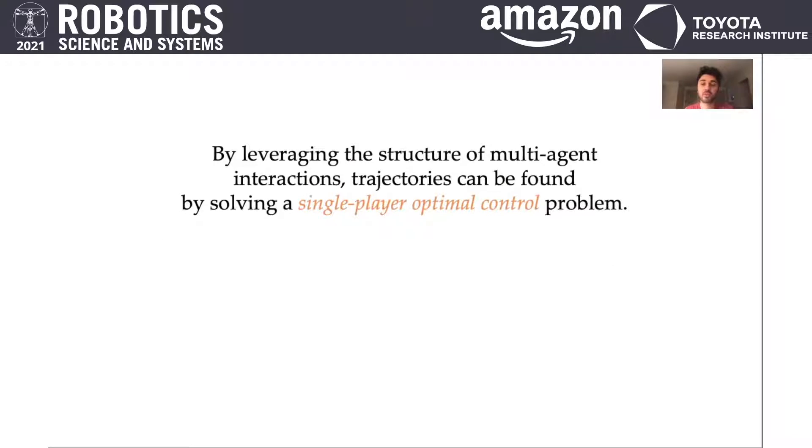In this work, we show that interactive trajectories can be found by solving a single optimal control problem instead of solving coupled optimal control problems.